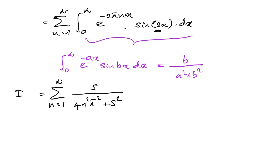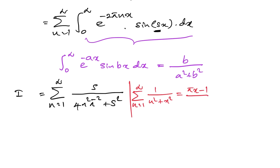This infinite sum is familiar from a previous video. The result is: the sum from n=1 to infinity of 1 over (n² + x²) equals π/(x · (e^(2πx) − 1)) minus 1/(2x²) + π/x. I will add the link in the description and also make a card.